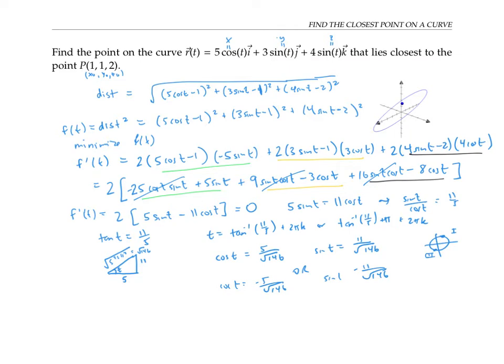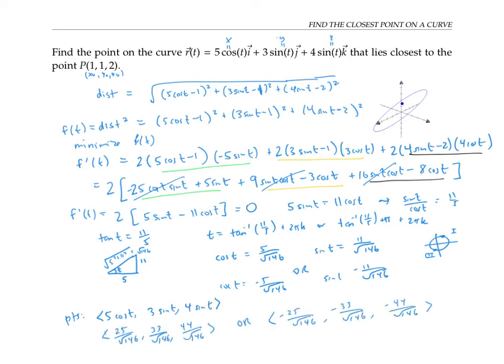Now I can use these values of cosine and sine to figure out my values of x, y and z on my curve. The points are of the form five cosine t, three sine t, four sine t. So that gives us two possibilities, just by plugging in the positive values for sine and cosine, or plugging in the negative values.